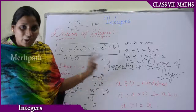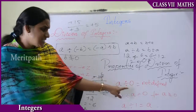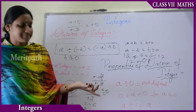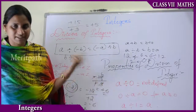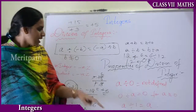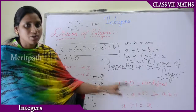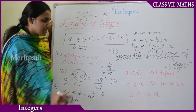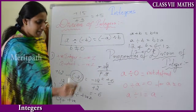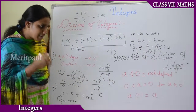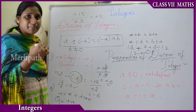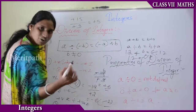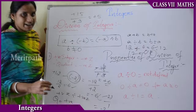Other division properties: A divided by 0 is not defined. Zero divided by A is always 0, for example 0 divided by 3 equals 0, where A is not equal to 0 because division by zero is undefined. Also, A divided by 1 equals A — any number divided by 1 gives the same number. For example, 3 divided by 1 equals 3, and minus 2 divided by 1 equals minus 2.